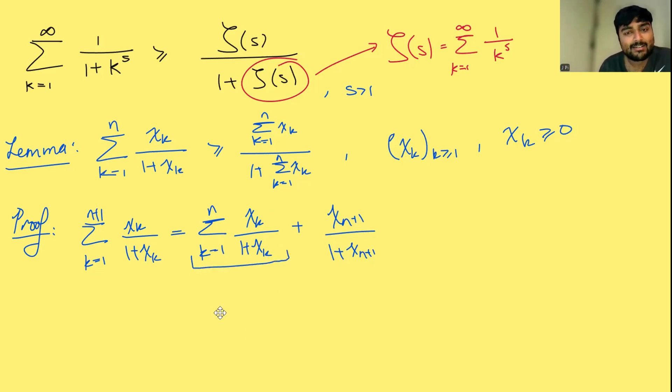Or by assumption, this guy here is at least the sum from k equals 1 to n of xk over 1 plus the sum from k equals 1 to n of xk. And then we've still got this to add on at the end. So xn plus 1 over 1 plus xn plus 1.